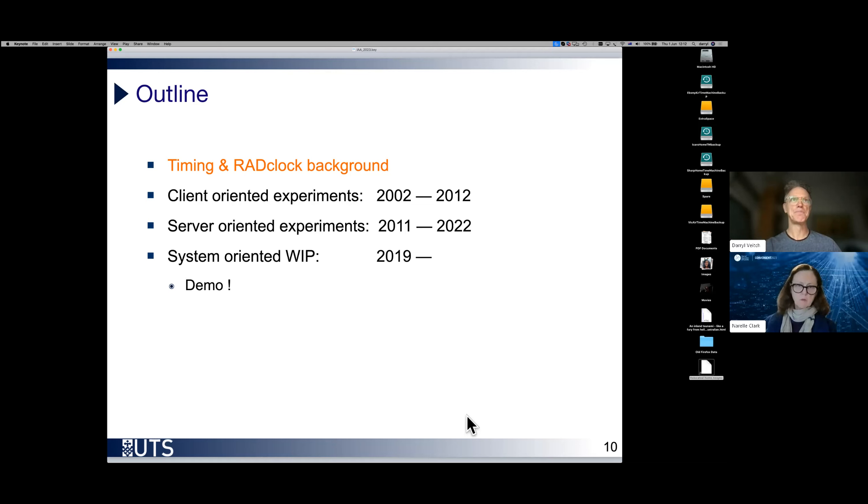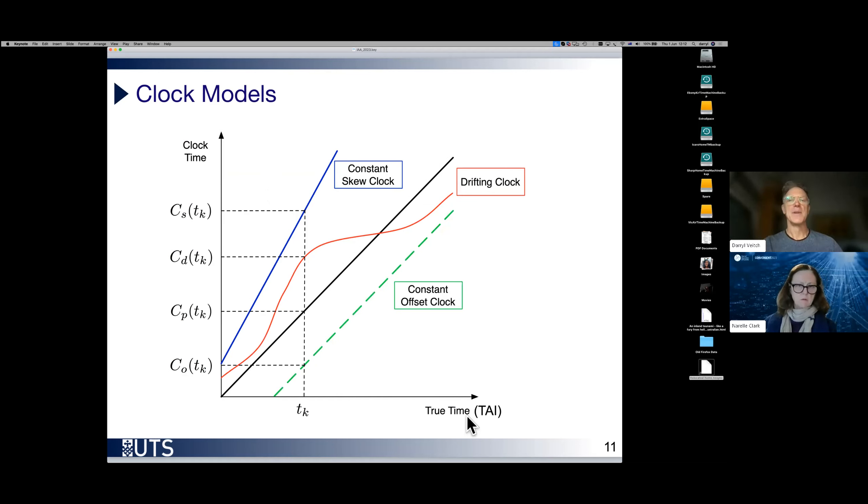It's so critical in this game to keep track of a proper model, proper mental model. Here we need to keep very distinct the idea of true time and what a clock might say. My clock is a construct. It could be arbitrarily wrong. So here our true time is this atomic internationally agreed upon atomic scale, TAI. A perfect clock CP for perfect would read TK at true time TK.